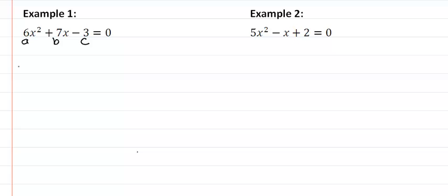So we put it into our formula. We have x equal to our negative b plus or minus square root of seven squared minus four times our a times our c all over two times our a.